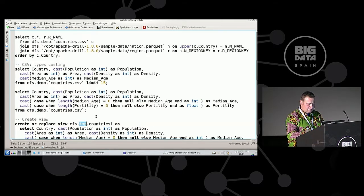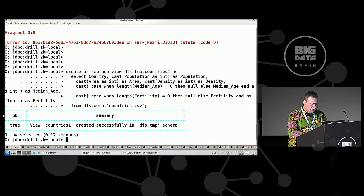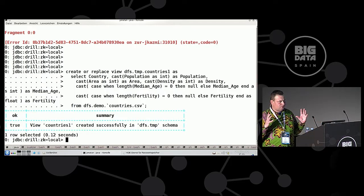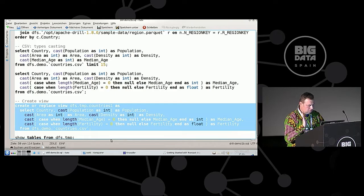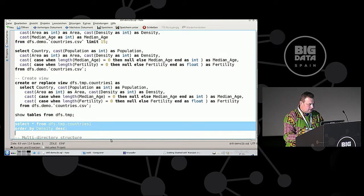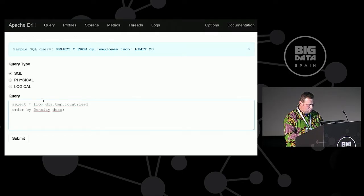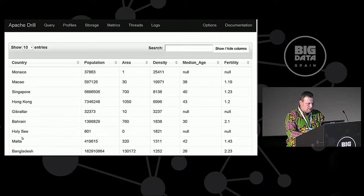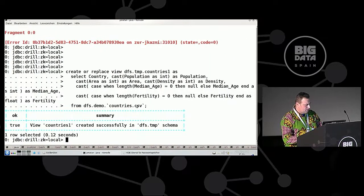So if we have already our nicely tuned SQL query, maybe we would like to make a view out of it. So let's do that. We will define it in temp, in our TMP workspace. Okay. The view countries one is successfully created. And in this way, drill starts to save some metadata. View is already definition, there are metadata about the types and everything. Normally drill discovers things on the fly, but in this case, everything is already predefined. So let's try to make a query from this newly defined view. We order it again by density, as before, and Monaco is on the first place, as expected. Good.